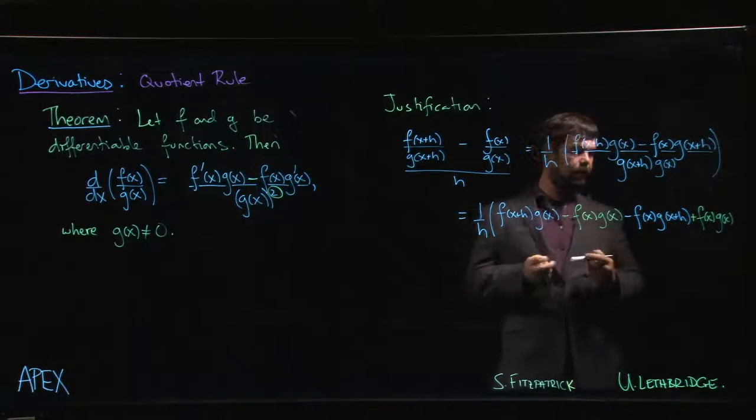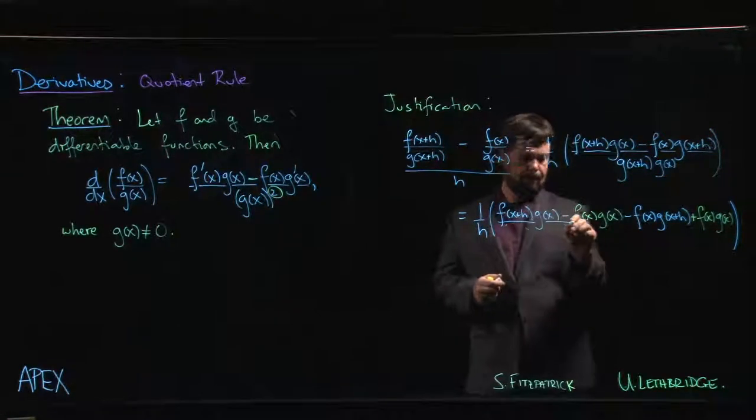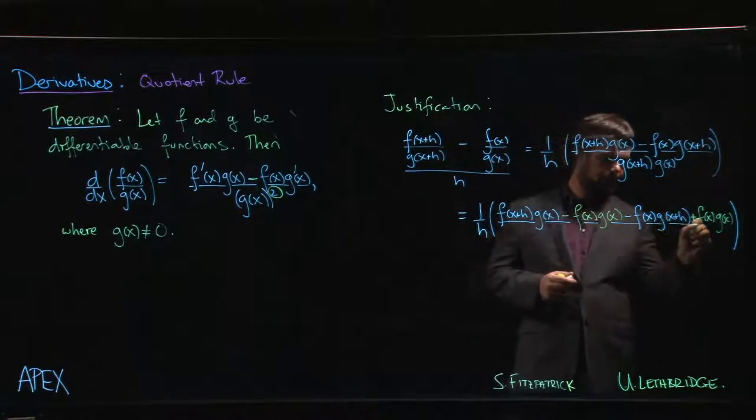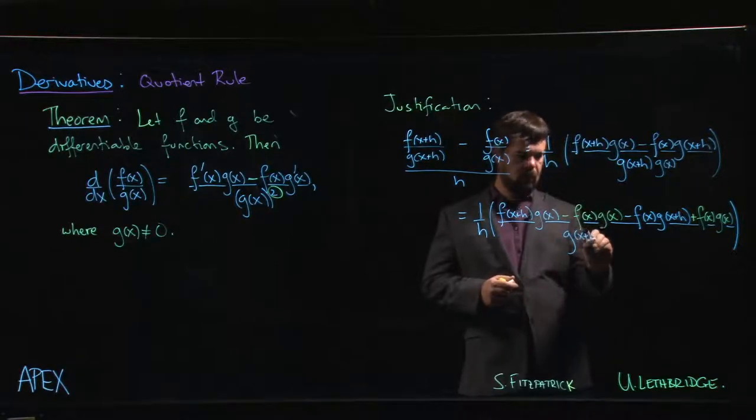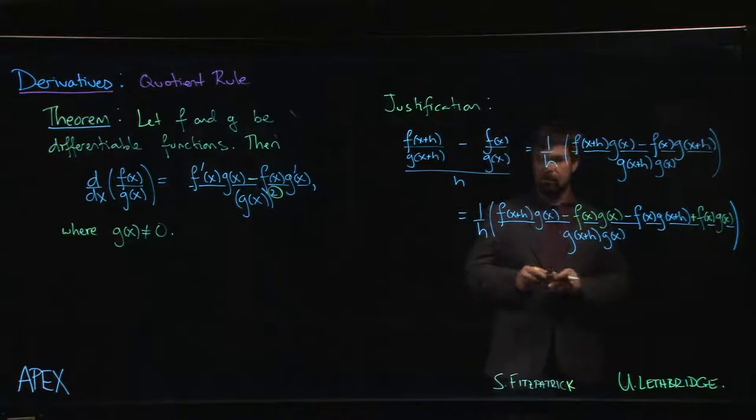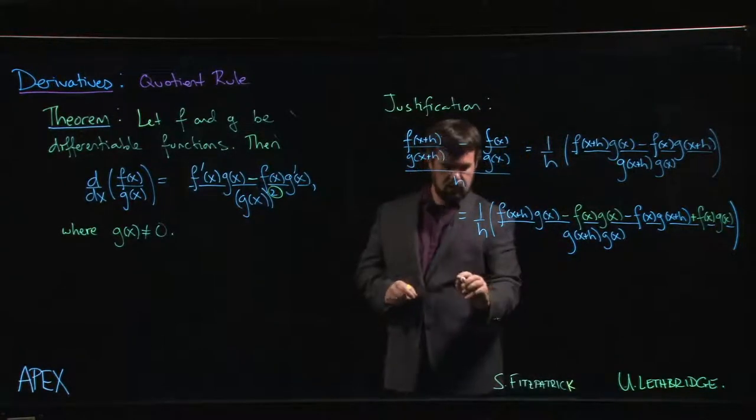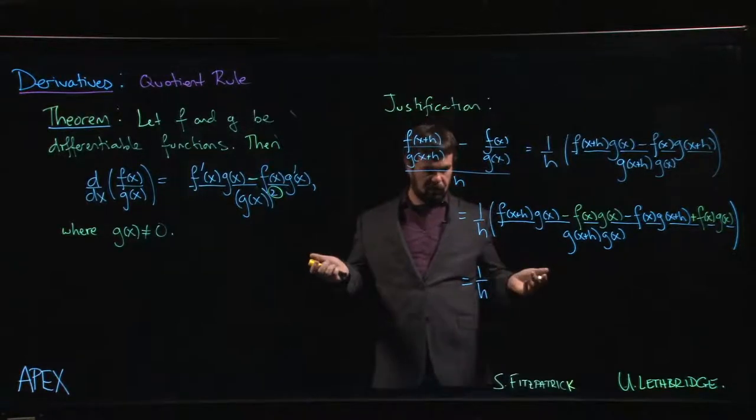So we have that whole mess. We're going to have the following: g of x plus h times g of x. Maybe now you can see how the grouping is going to go. We'll probably leave it at this next line and you'll be able to sort of see where we go from here.